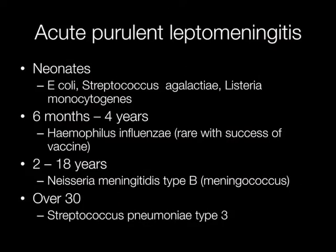The type of bacterial organism causing acute purulent leptomeningitis depends largely on the age of the patient. Neonates are at particular risk of E. coli, streptococcal, and listeria meningitis. Haemophilus meningitis used to be most frequent between the ages of six months and four years, although this is now thankfully rare due to the success of the vaccine.